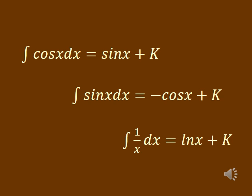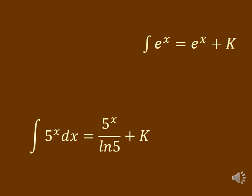We also learned some other basic rules, like for the trig functions, the antiderivatives were sort of the opposite of derivatives. The antiderivative of cosine was sine, the antiderivative of sine was negative cosine. We figured out that the antiderivative of 1/x was natural log. For e to the x, the antiderivative was itself, and if you had any other number to the x power, you did that number to the x divided by the natural log of that number.